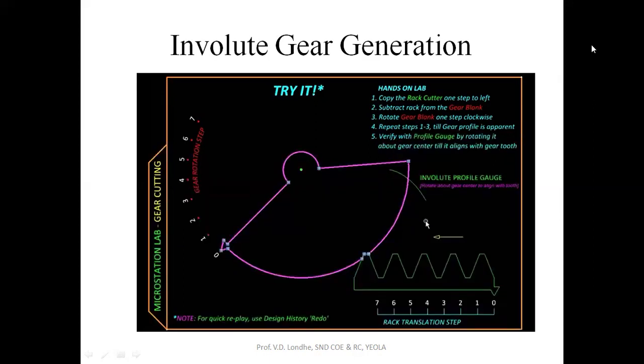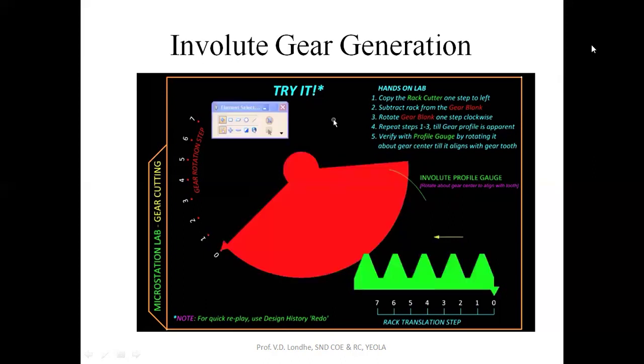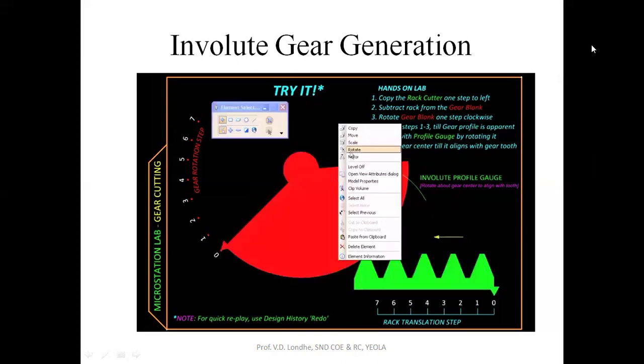Let us simulate that process here. Here is a gear blank or a metal disc and this is the involute rack. We will be giving a step-by-step rotation to the gear blank and we will be giving a proportionate translational motion to the rack, and whenever they overlap we will be removing that area.